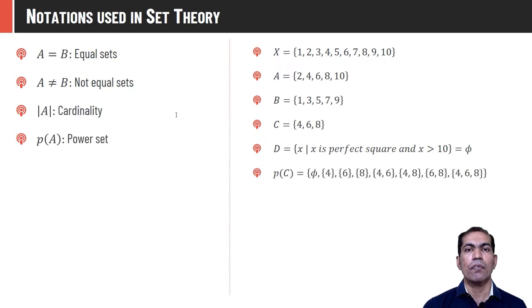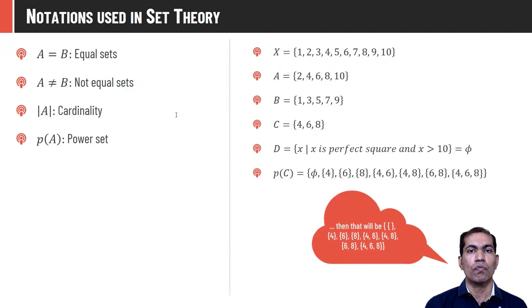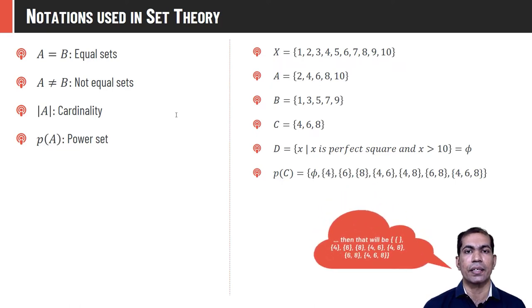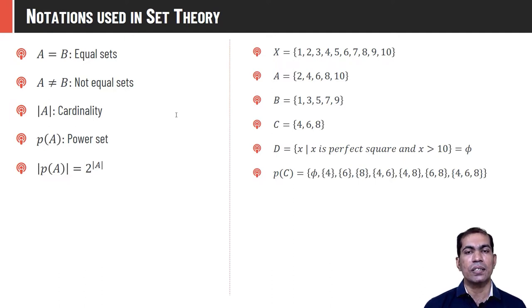P(A) represents the power set — the collection of all subsets of a given set. By definition, the null set and the set itself are always subsets. The power set of C = {2, 4, 8} will be: {φ}, {2}, {4}, {8}, {2,4}, {2,8}, {4,8}, and {2,4,8}. The cardinality of the power set is always 2^n, where n is the cardinality of the set. Since C has 3 elements, the power set of C has 2³ = 8 elements.